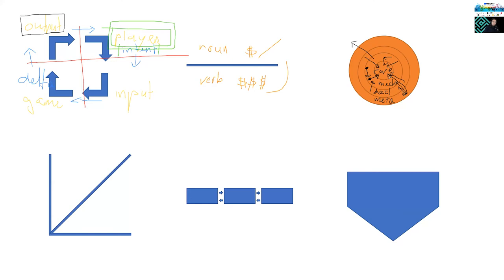The best way to get to the core is to keep asking yourself why someone would play your game. What are they getting out of it? Are they going to feel clever, challenged, happy, social? What is at the heart of your game — what is that feeling, that core? If you don't know that, you need to figure it out. It's so important to know what you are making.